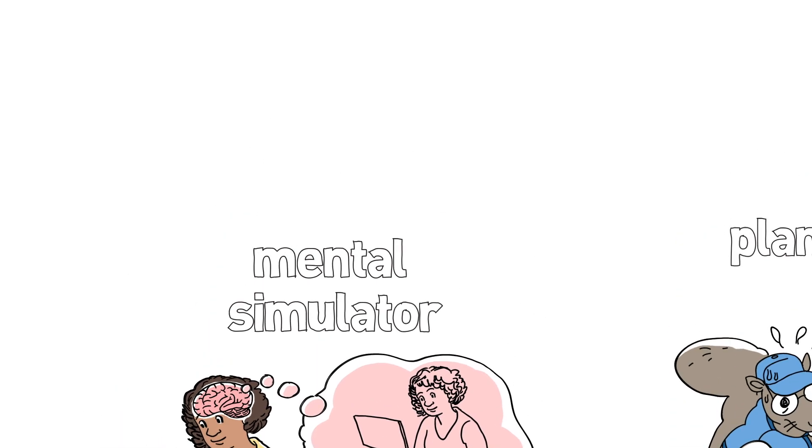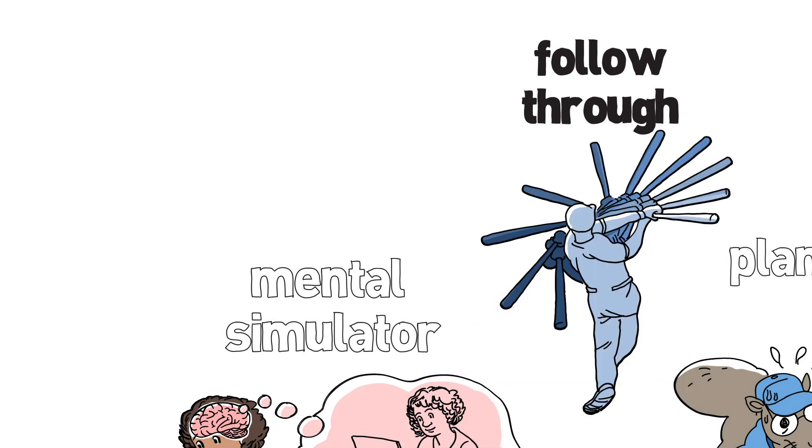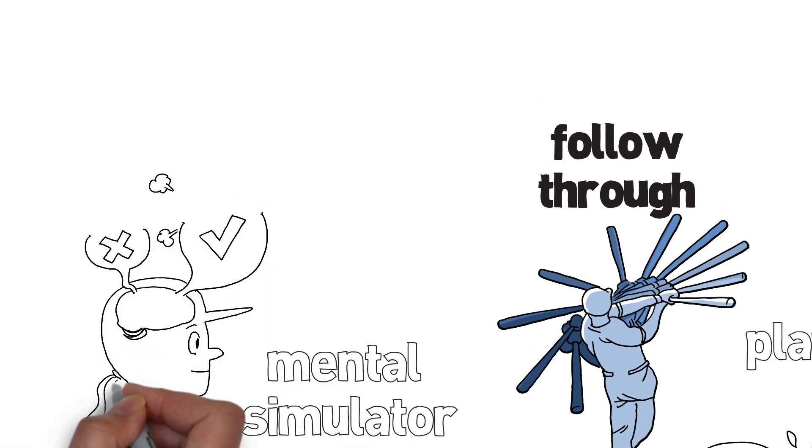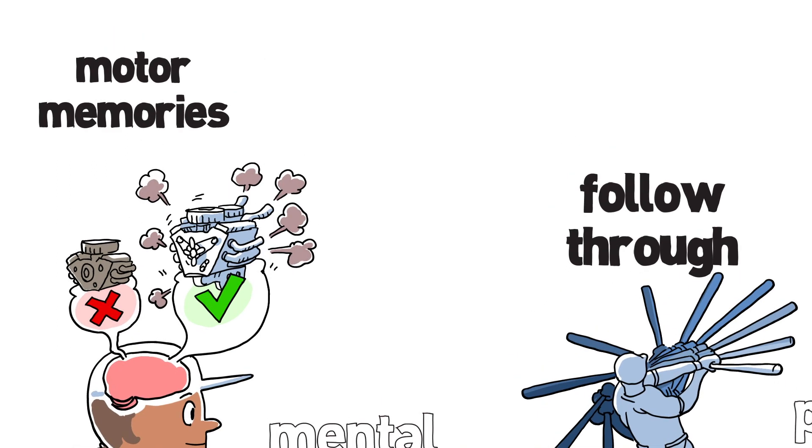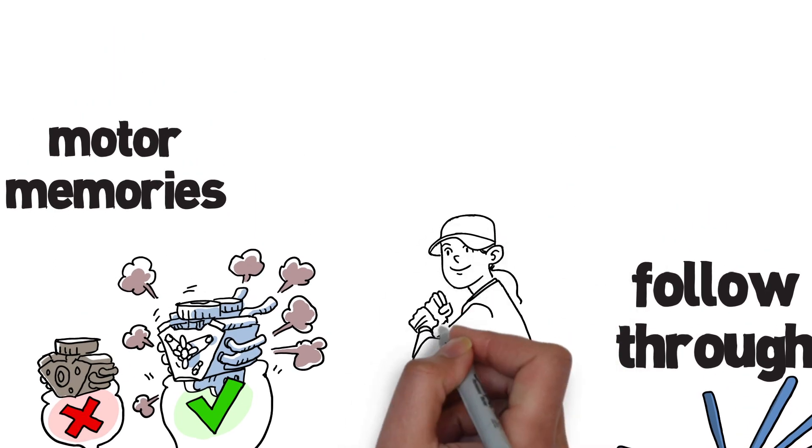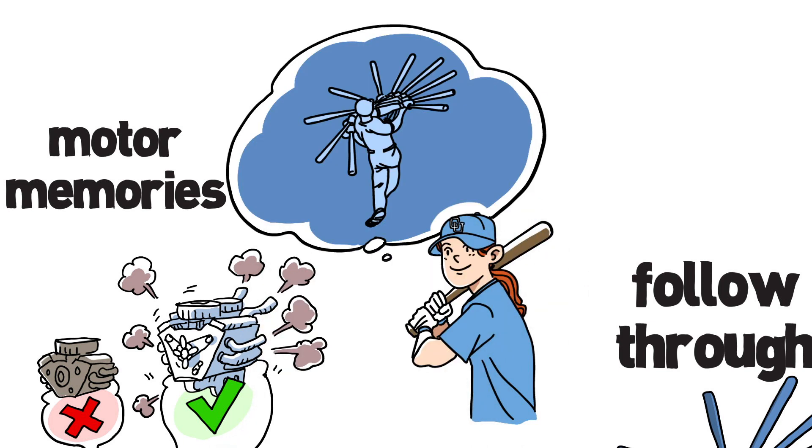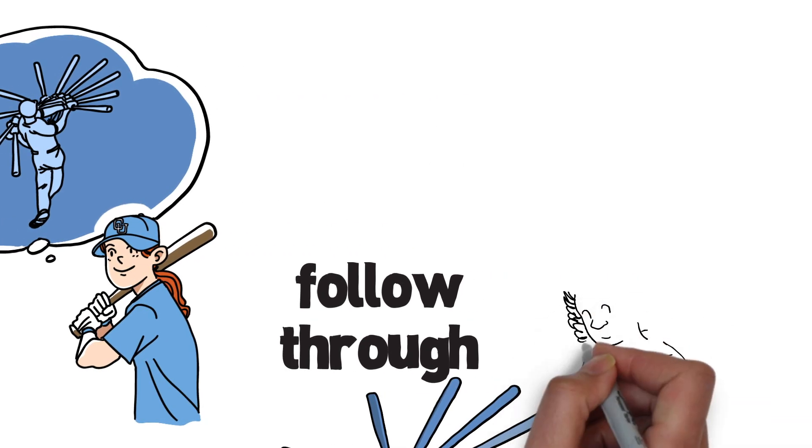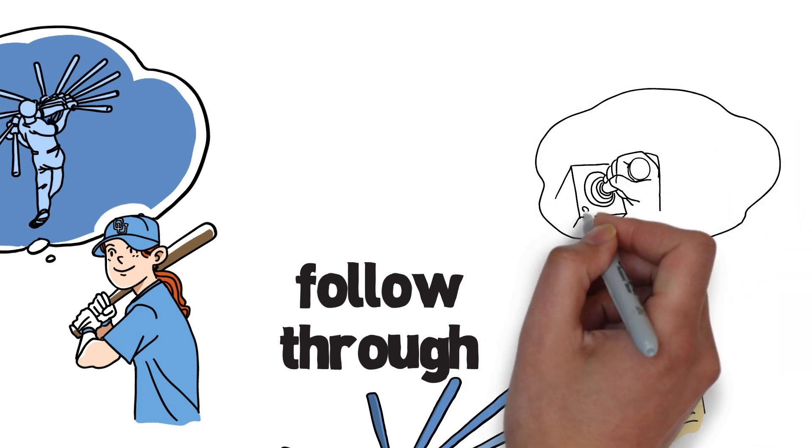Every trainer will tell you that it's important to follow through after striking the ball. We have shown this helps learning as planning different swings activates different motor memories. A consistent follow through ensures that the correct motor memory is activated and updated every time you perform a swing. Indeed we've shown that people can even get better at learning when we ask them to merely imagine following through.